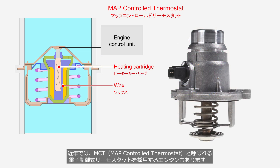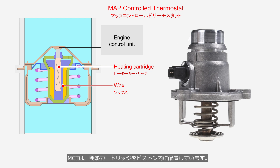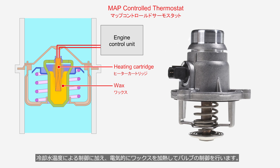In recent years, some types of engines adopt an electronic control thermostat known as MCT, or MAP-controlled thermostat. MCT features a heating cartridge within the piston. In addition to control based on coolant temperature, it electrically heats the wax for valve control.